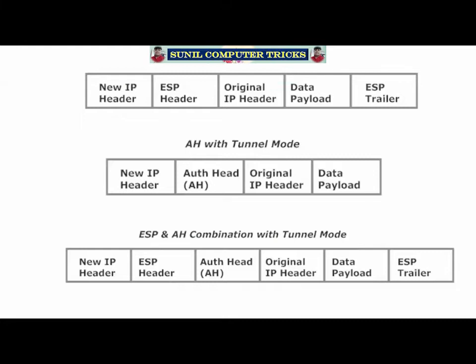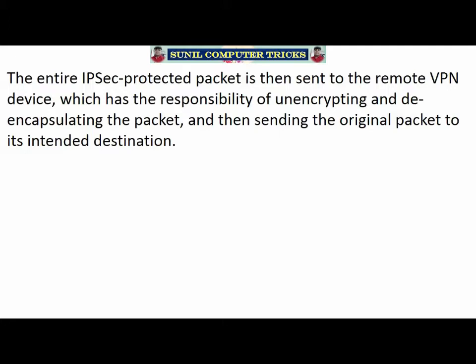Here's a visual to help knock that theory down. With ESP in tunnel mode, you see the ESP header and trailer encapsulating the original IP header and data payload, with a new IP header on the very front. With AH in tunnel mode, the authentication header is inserted right in front of the IP header, and a new IP header with tunnel endpoint addresses is added. You can also run ESP and AH together — they're not mutually exclusive. In that combination, the AH is placed in front of the original IP header, then the AH, original IP header, and data payload are all encapsulated by ESP, with a new IP header on the very front. After all that, the entire IPSec-protected packet is sent to the remote VPN device, which unencrypts and de-encapsulates it.